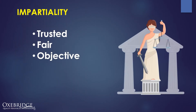ISO 17020 emphasizes the need for inspection bodies to be impartial and independent so that the results of their inspection could be trusted and free of any suspicion. This is obviously critical when C3PAOs will be issuing certifications attesting to the validity of cybersecurity controls. The body must identify and manage risks to impartiality, including conflicts of interest. While the standard does not require a written procedure here, any accreditation body will likely demand to see one anyway. These procedures must define policies on conflicts of interest, and the methods by which those are identified, ranked for risk, and mitigated.